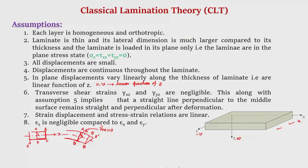Similarly, taking a section in the y-z plane shows that γyz = 0, meaning a line initially straight and perpendicular to the middle surface remains so after deformation. The strain-displacement and stress-strain relations are linear — small displacements allow linear strain-displacement relationships, and the stress-strain relationship follows Hooke's law. The strain in the z-direction εz is negligibly small compared to εx and εy and may be considered zero — because the laminate is thin, the change in length of the line AD is negligible compared to the displacements.